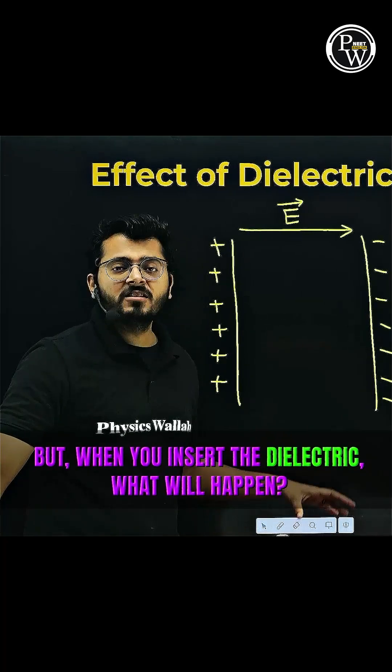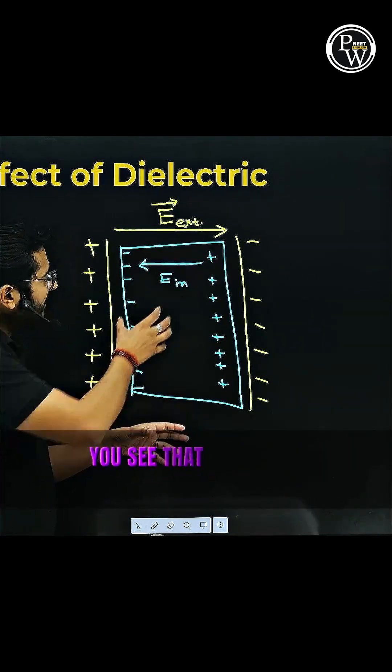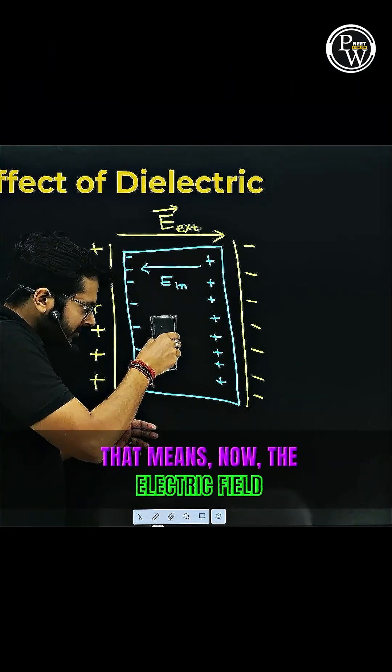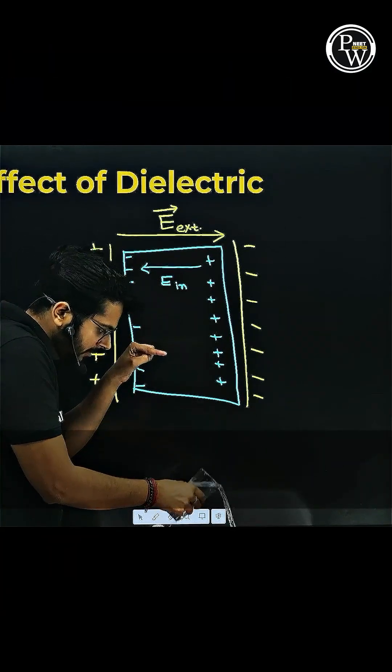But when you insert the dielectric, what will happen? You see that there is an internal field that is setting up, reducing the electric field between the plates. That means now the electric field that was full is now reduced.